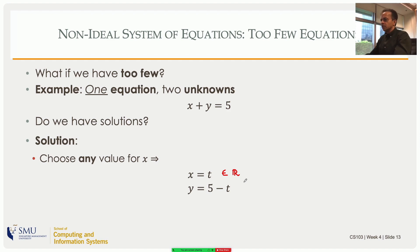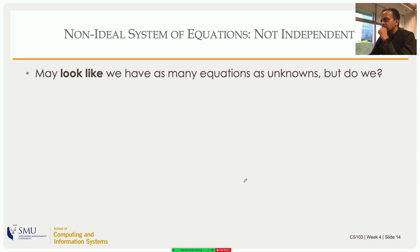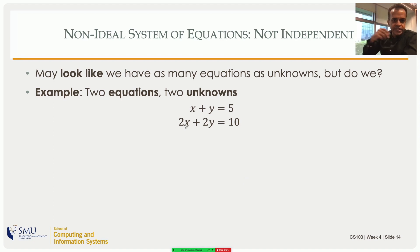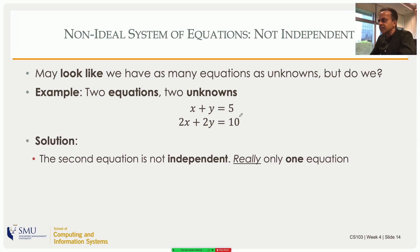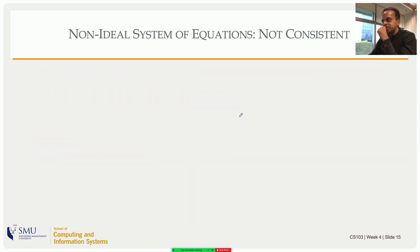Now consider two equations and two unknowns where the second equation is just the first equation multiplied by 2 — you really only have one independent equation. Choose any x = t, and any y that satisfies the equation is a solution. Again, infinity of solutions because the equations are not independent.